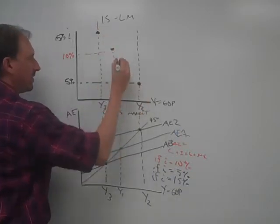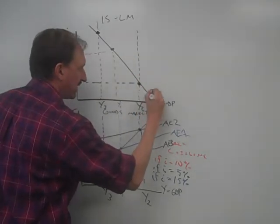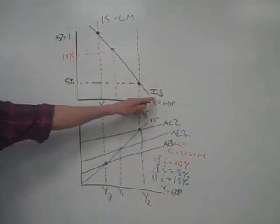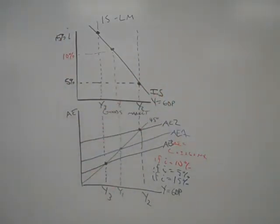So we have that point, we have that point, we have that point. We can connect all those points, and we get what's called the investment saving or IS curve. And it's downward sloped.